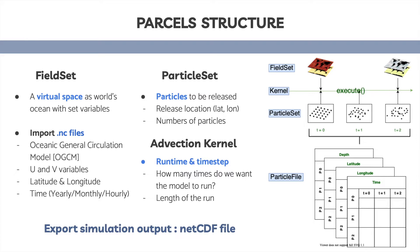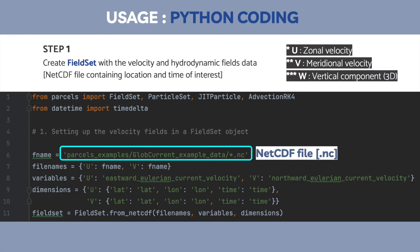The first set of code that Ocean Parcels provides you — the only thing you need to do here is input the NetCDF file in the designated section. In this case I'm using an example file from Ocean Parcels. The hydrodynamic data I mentioned — u and v velocities — are included in the code.